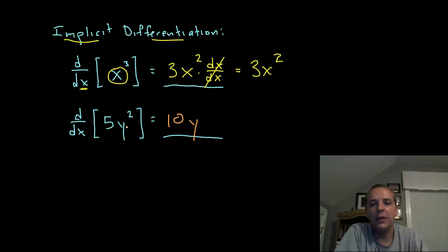10y. But if we super over-analyze this one more time, think of it like the chain rule. Bring the 2 down. 2 times 5 is 10. Y to the first, followed by the derivative of the inside with respect to x.